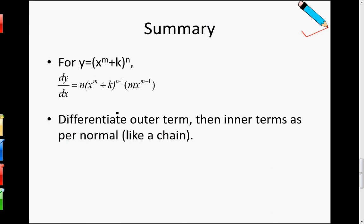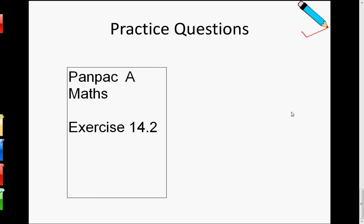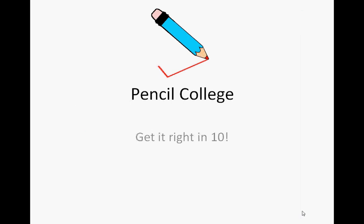In summary, the chain rule is just treating what is inside the brackets to the power of n as a big x — differentiating it first, then differentiating what's inside the bracket. Differentiate the outer term, then the inner term, like a chain. So this is called chain rule. With this, you can actually practice exercise 14.2 of the PENPAD AMAX textbook. I thank you for watching this video. I will see you in the next video.